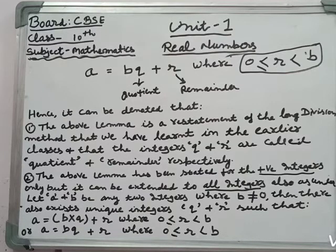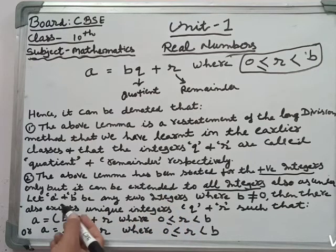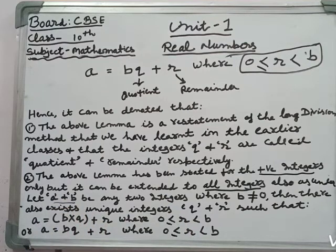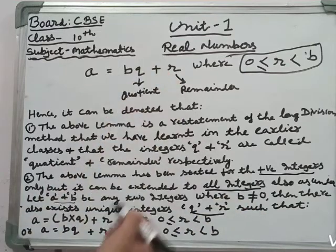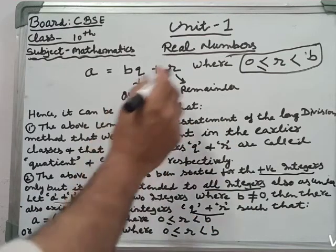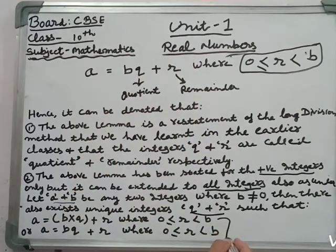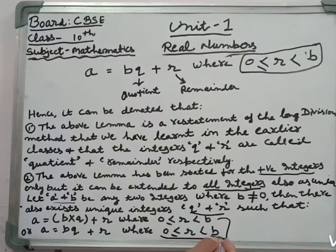If we have two integers, then there are also unique integers q and r such that this equation in this lemma - mainly this lemma which we have to remember - a equals bq plus r where this relation exists.